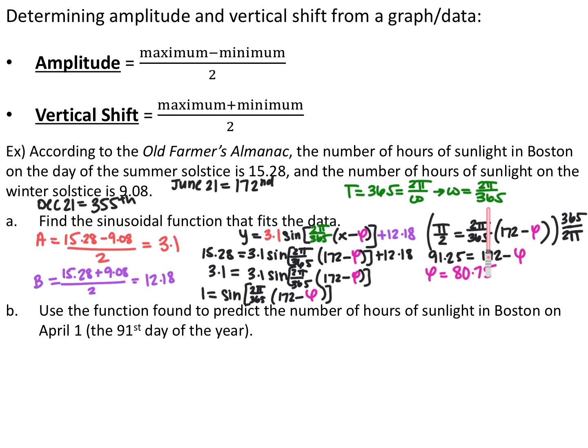Multiplying both sides by 365/(2π), we get 91.25 = 172 - φ, so φ = 80.75. This makes sense given that leap years account for the actual 365.25-day year. Now we have all the information needed to write our model.